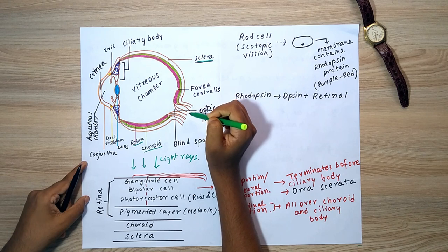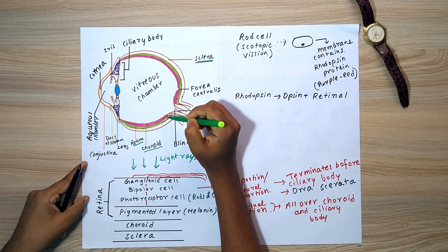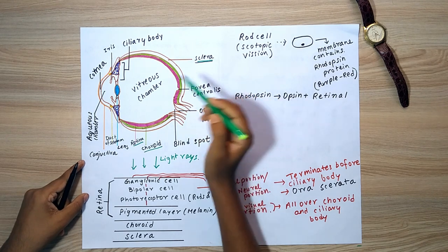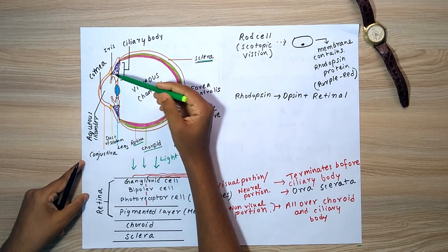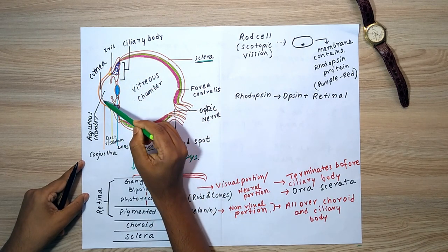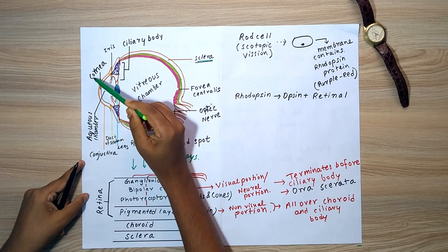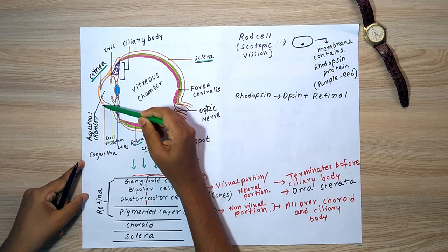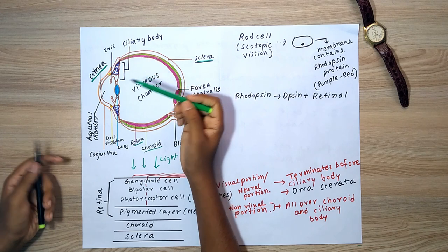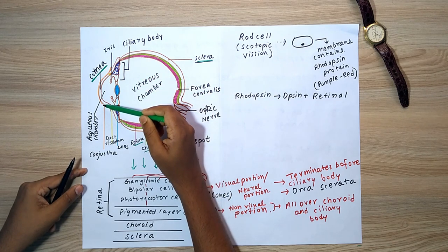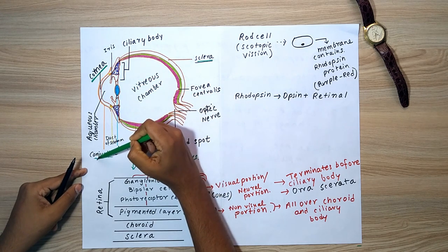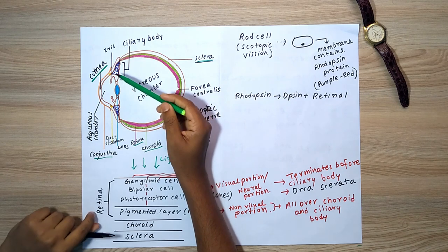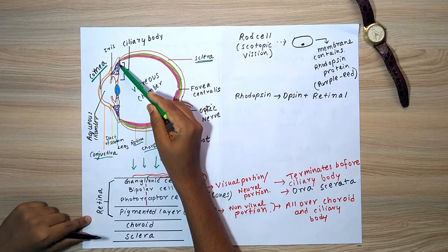We also have the optic nerve leaving the eye. At the point where the optic nerve exits, no vision occurs. In the front part of the eye there is a bulging structure known as the cornea — that is what we see from the front. Above the cornea there is a thin tissue known as the conjunctiva, denoted by the orange color in the diagram.